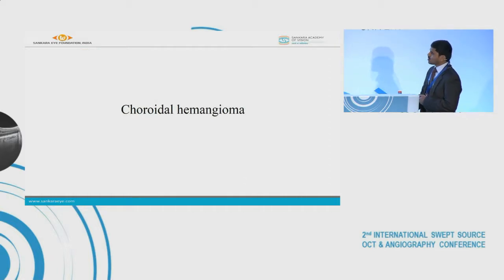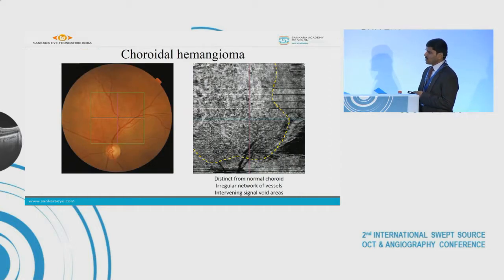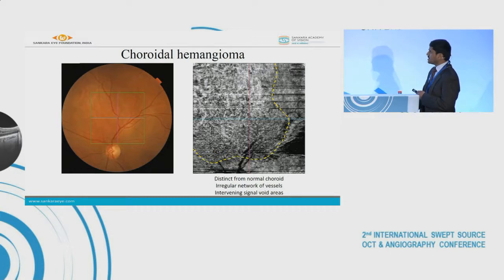Coming to choroidal hemangioma — the vasculature of the choroidal hemangioma is distinctly seen from the normal choroid, so we can map the margins of the tumor.